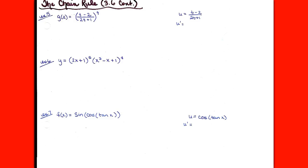All right, so section 3-6, picking up with example 5. Yesterday we looked at the basics of the chain rule and we did some problems. Today we want to look at some more elaborate examples.